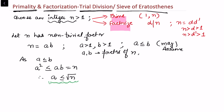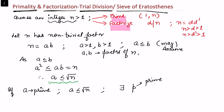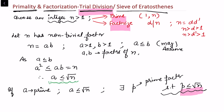If a is prime, then a ≤ √n. Otherwise a itself has a prime factor, and we can find a prime p such that p ≤ √n. That is why the method is called trial division — we try dividing by primes up to √n. At least one prime factor must be ≤ √n. However, if n is very large, this condition is not computationally efficient; for small integers we can use this trial division.